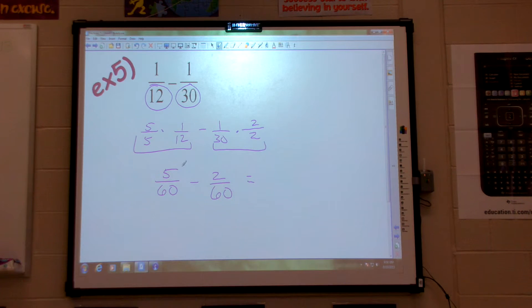So now I can literally subtract the tops and get three over—bottom stays the same—three over sixty. The last thing I need to do is, does it reduce? Sure does. We get one twentieth.